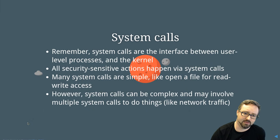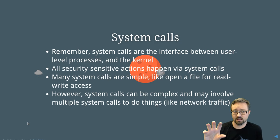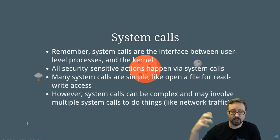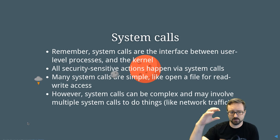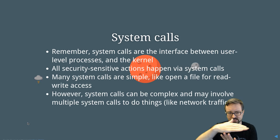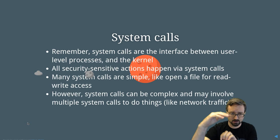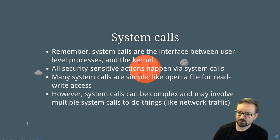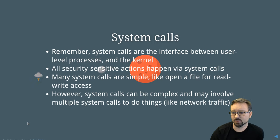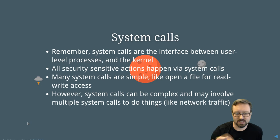One way to look at a program's behavior is to look at the system calls it makes. System calls are the interface between the user-level process and the kernel, which manages the actual hardware. You can look at all the system calls sent by the program to the kernel — things like opening a file or opening a network port to a remote computer. A lot of high-level interesting behavior is visible at the system call level, but not everything: once a file is open and the program is doing computations, that happens at the user level with no system calls involved.